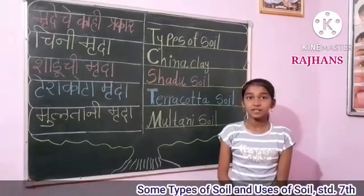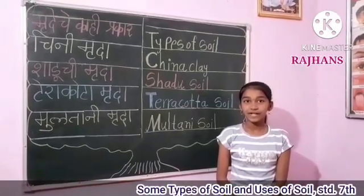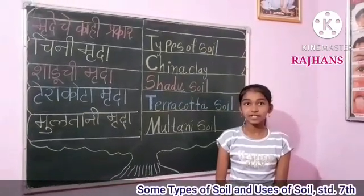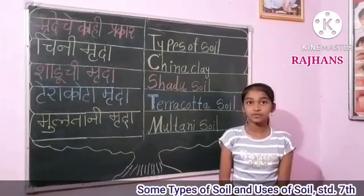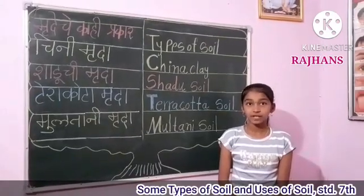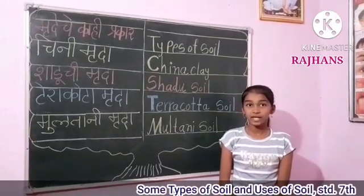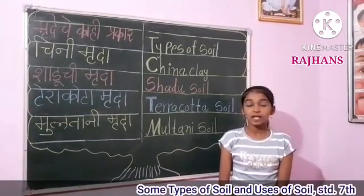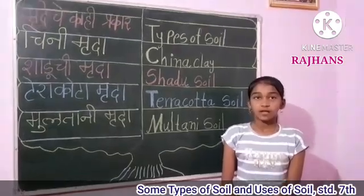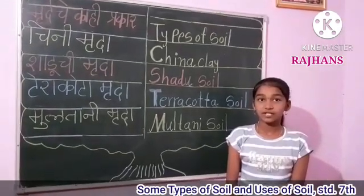China clay, also called kaolin, is white in color. It is used to make crockery, bathroom tiles, stacks, laboratory apparatus, jars, etc.